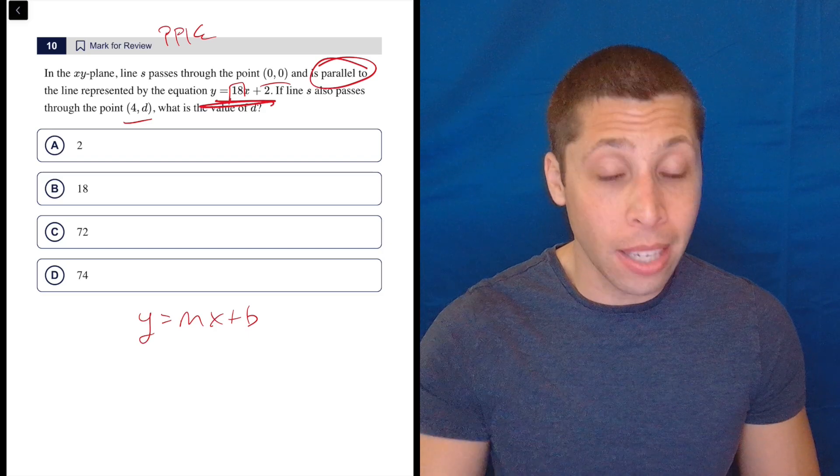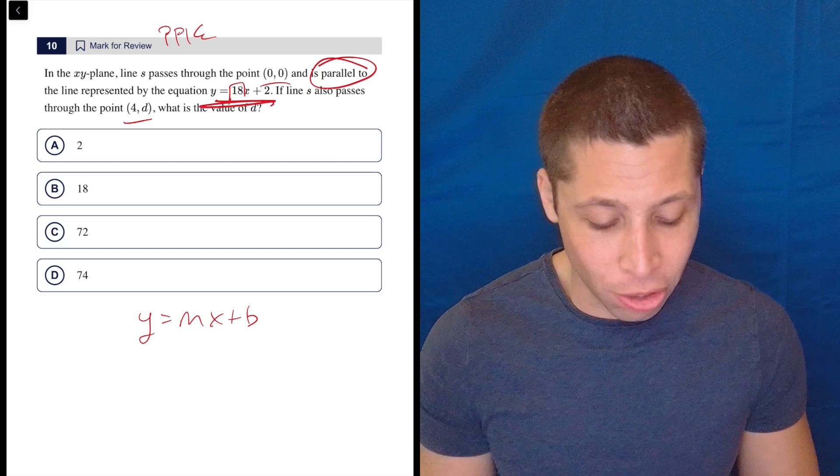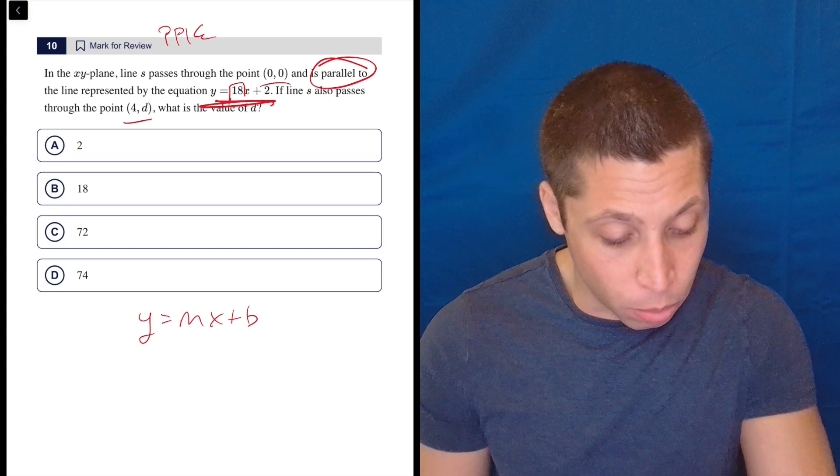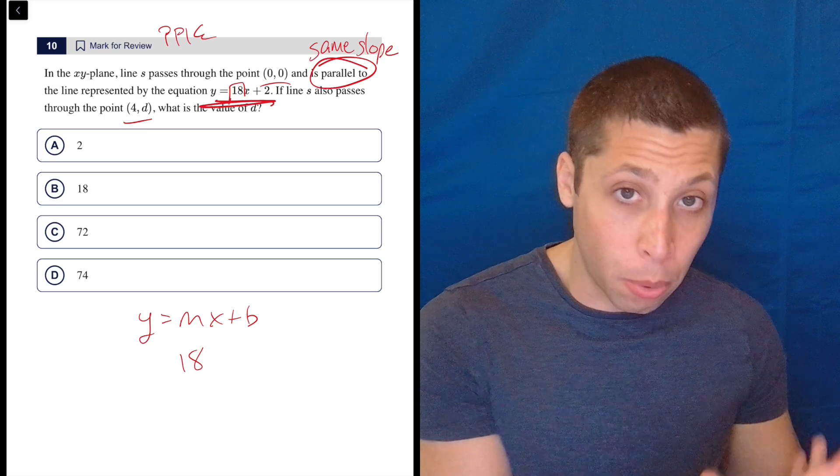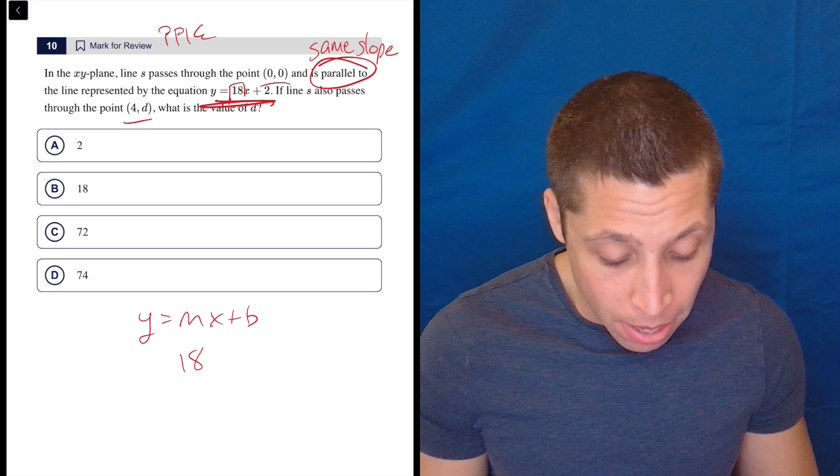So parallel lines, you just need to know this instantly. It's an important translation. Parallel means same slope. So that means 18, plugging points into equations, is my value of m.